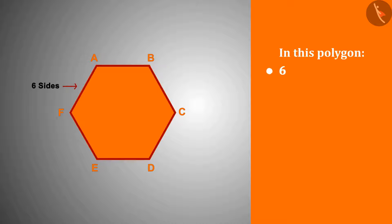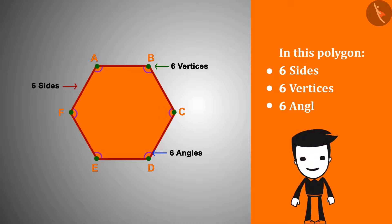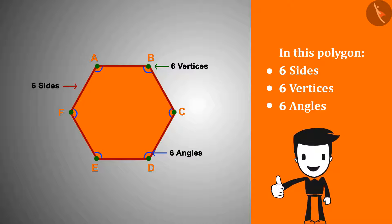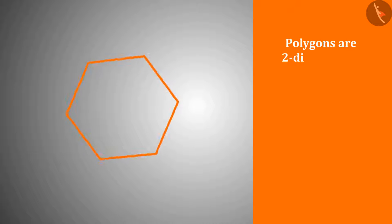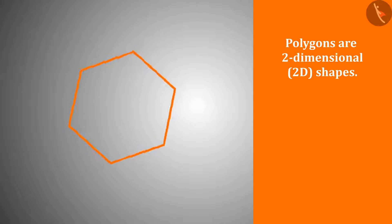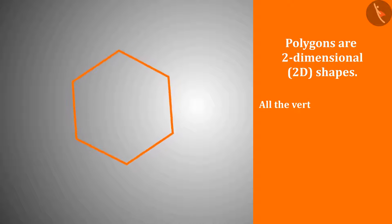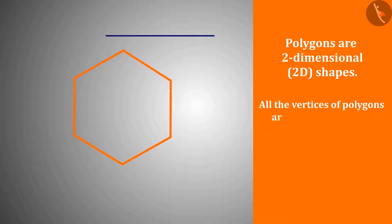There are six sides, six vertices and six angles in this polygon. An important fact about polygons is that they are two-dimensional, 2D shapes — that is, all the vertices of polygons are in the same plane.